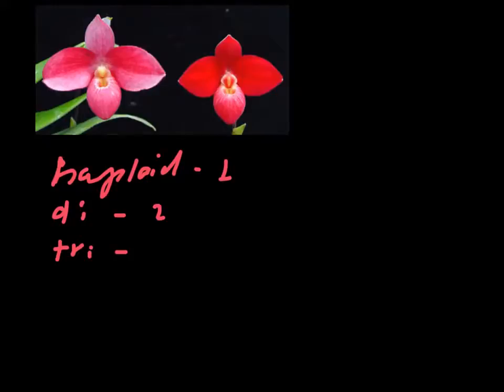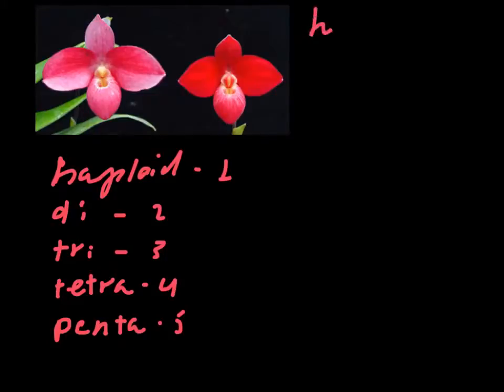So all the suffixes are from chemistry and might be well known to you. Penta means five sets of chromosomes, hexa means six, hepta seven, and octa eight.